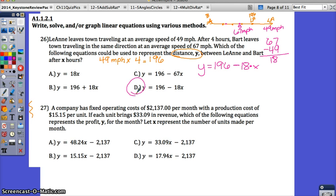Sometimes it helps to draw a picture. I like using line segments to represent where they are and where they're going. Number 27. A company has a fixed operating cost. That cost is set. It doesn't matter how many they produce. Their operating costs are $2,137 per month with a production cost of $15.15 per unit. So this is a fixed fee every month, and this is a fee that they pay per unit that they produce.